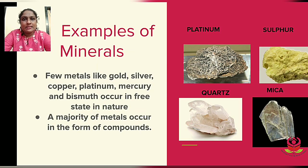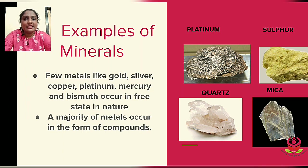Some minerals are found in their free state and the majority are found in the form of compounds. Few metals like gold, silver, copper, platinum, mercury, and bismuth occur in free state in nature. The majority of metals occur in the form of compounds, which as we studied are made up of two or more types of elements.